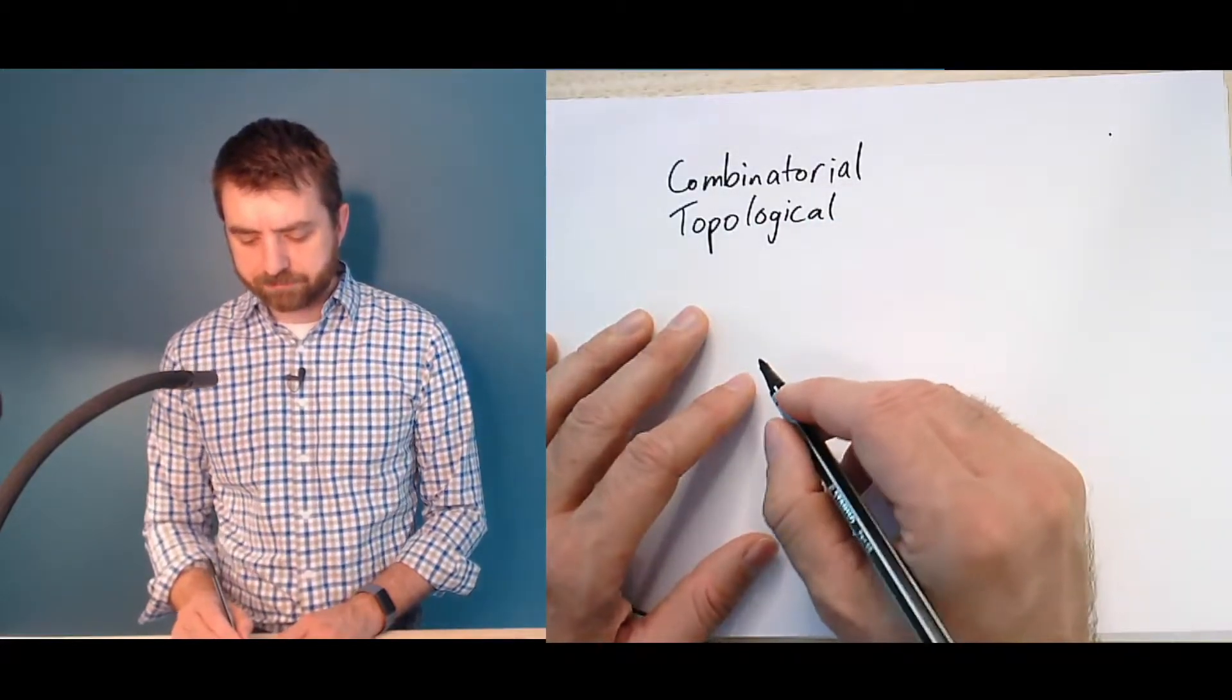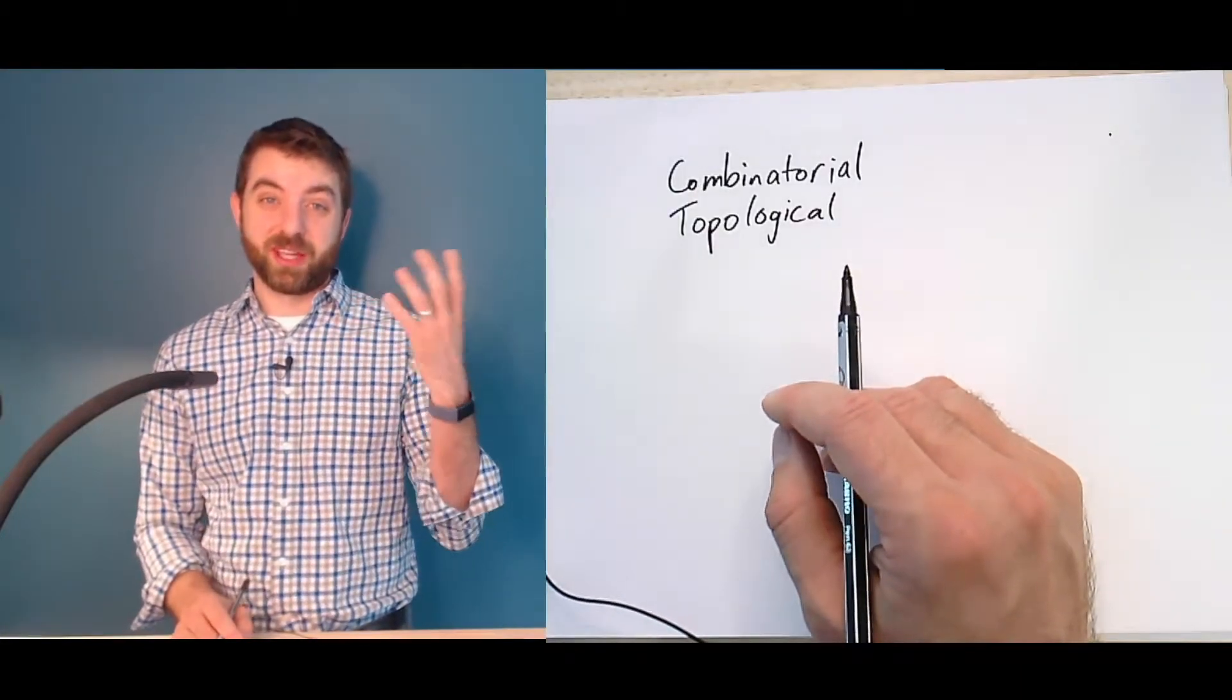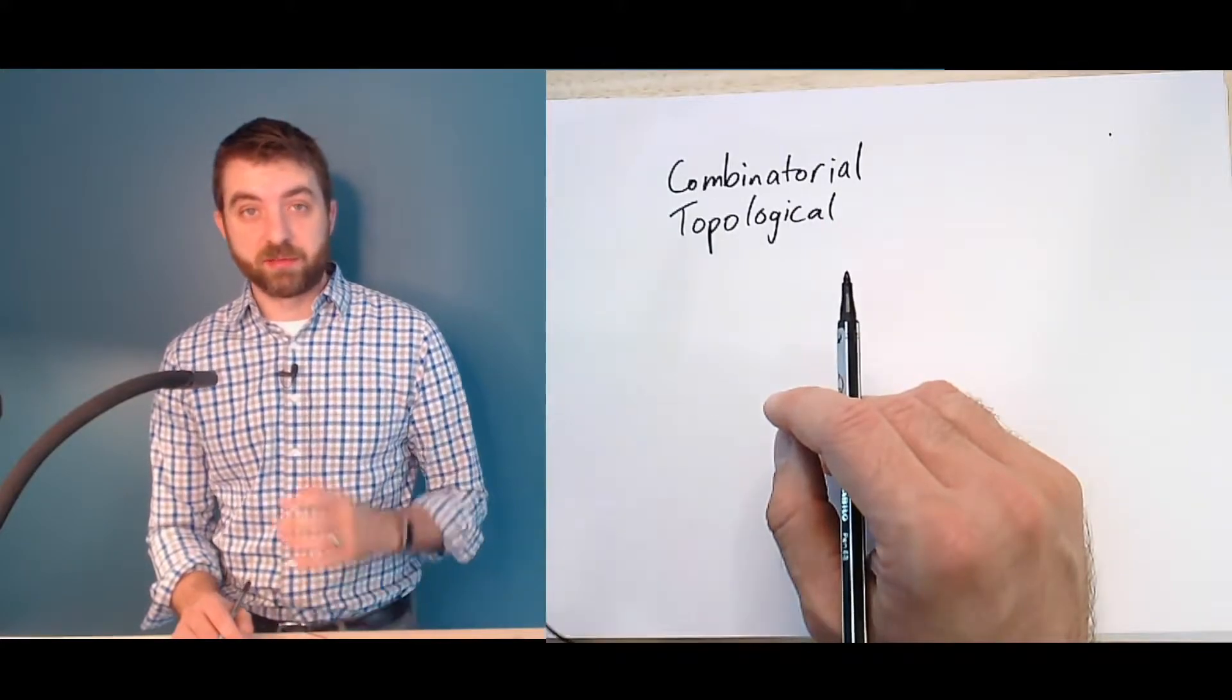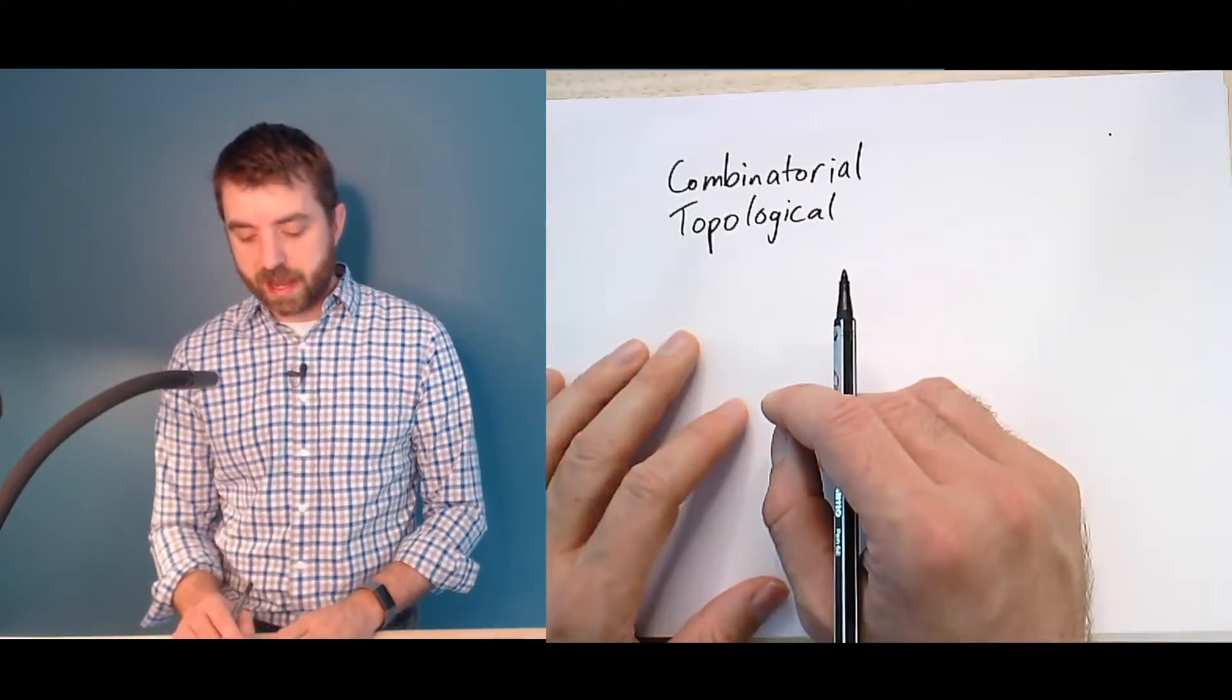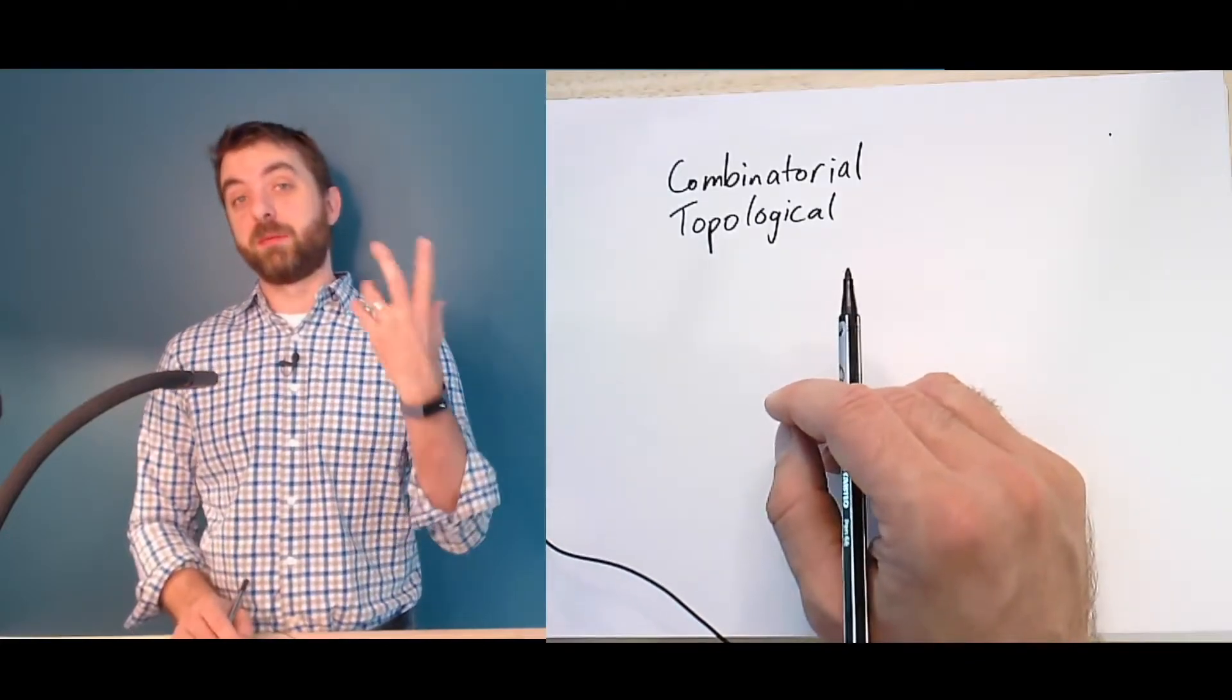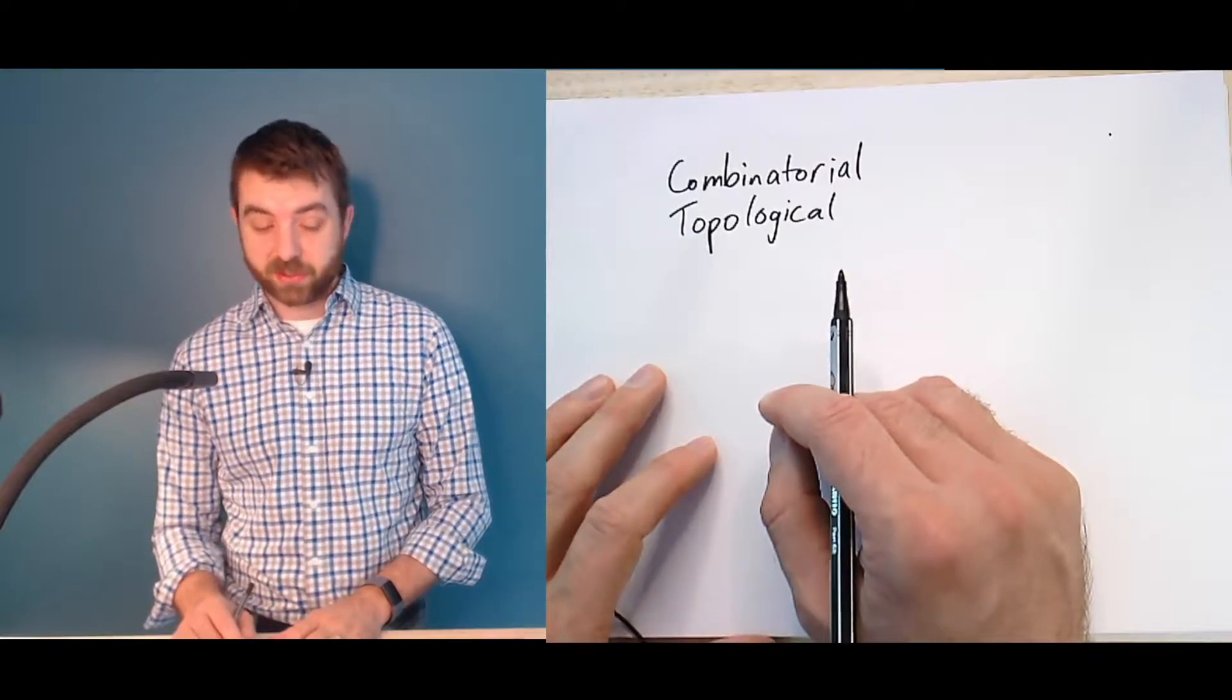And so we're going to look at how you can take a graph as a combinatorial object and turn it into a set of points in, say, the plane or points in 3D and how to do that in a mathematically rigorous way so you can learn things about the combinatorial structure from the topological structure and vice versa a little bit.